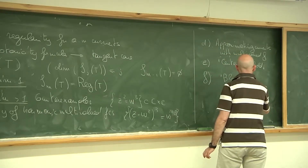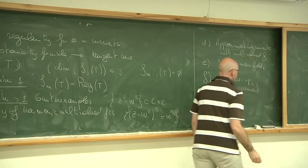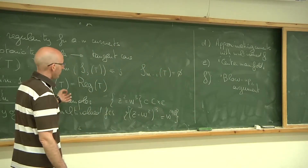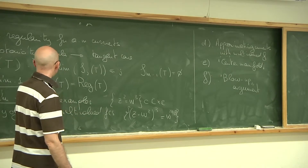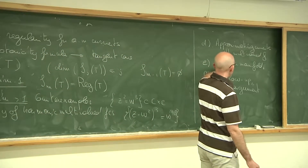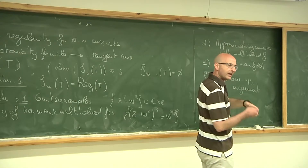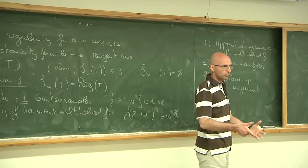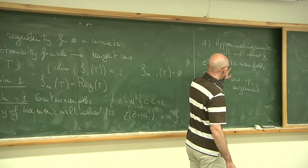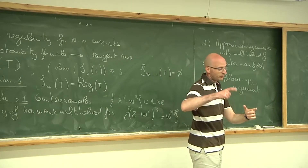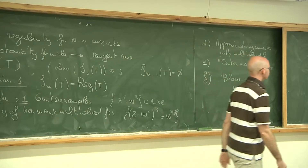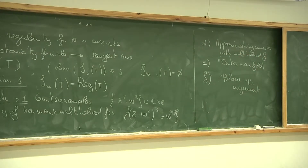By a blow-up argument I mean: assume that the current has too many singularities, so the singularities cluster somewhere. Since the singularities are too many, I can find a cluster point where I find a flat tangent plane. At that flat tangent plane I construct my center manifold and my approximation, I rescale, use a compactness argument, and this converges to a harmonic multivalued function. The singularities of the current are inherited by the harmonic blow-up — what we call the limit of the rescaled sequences.